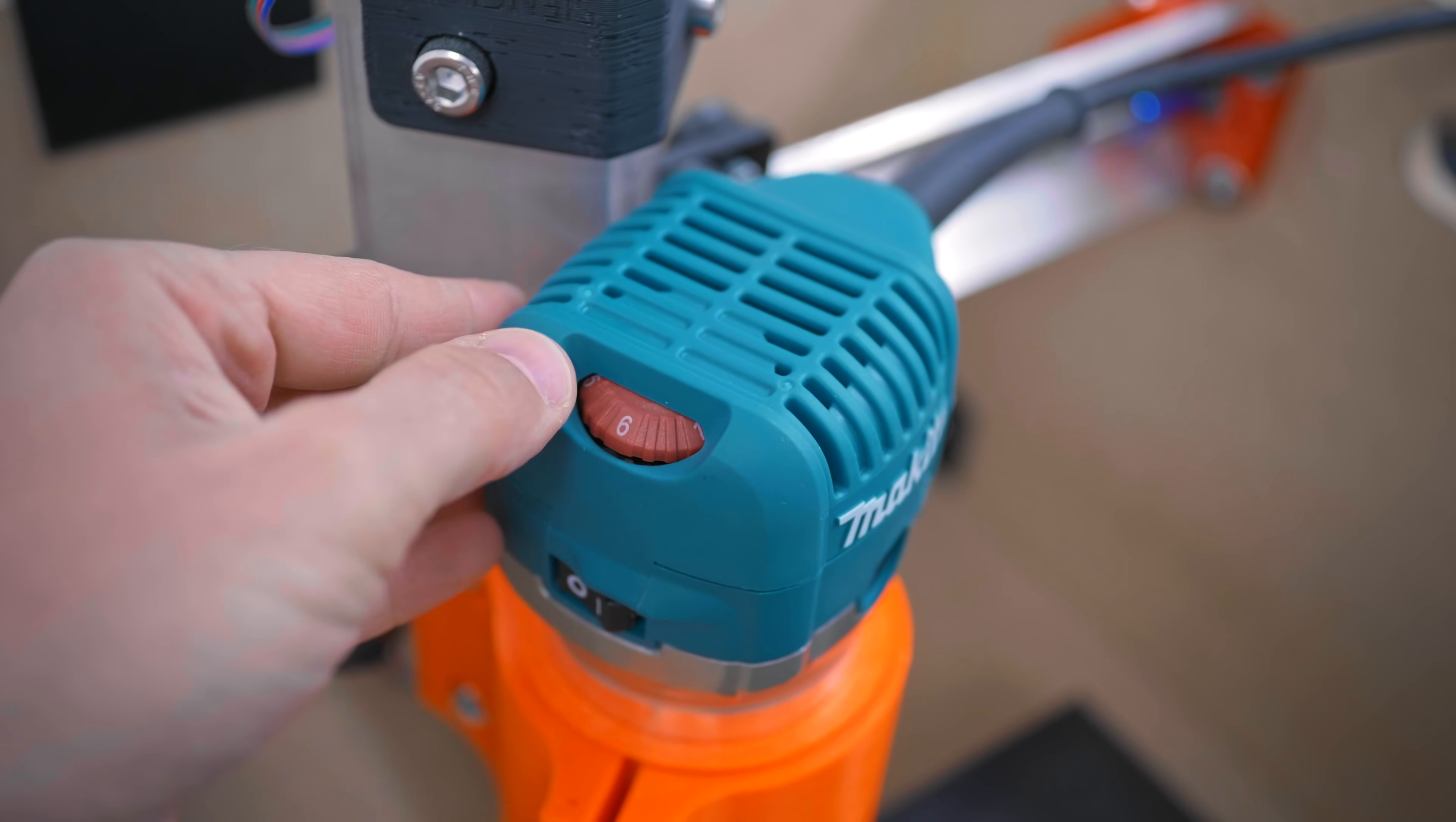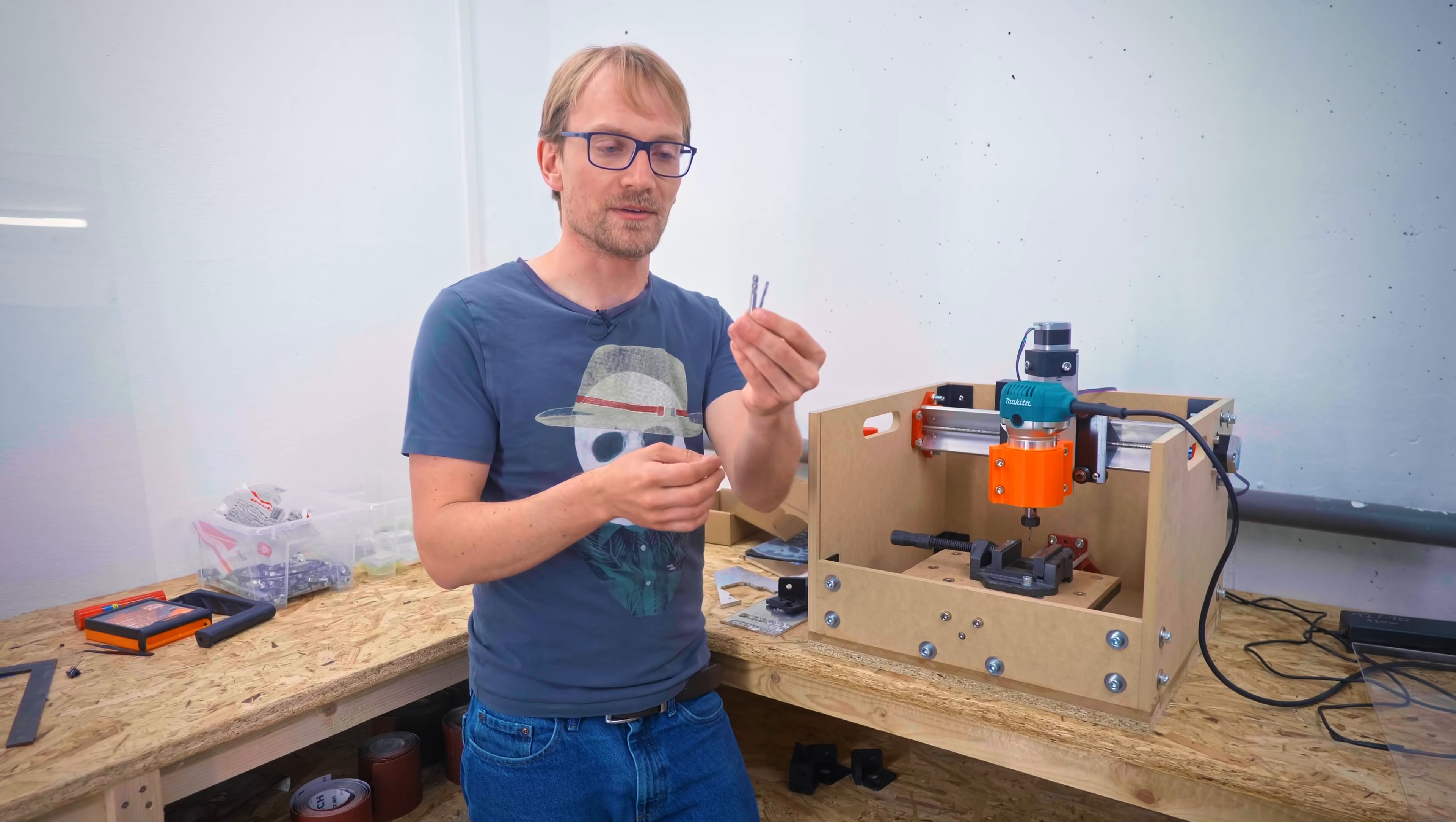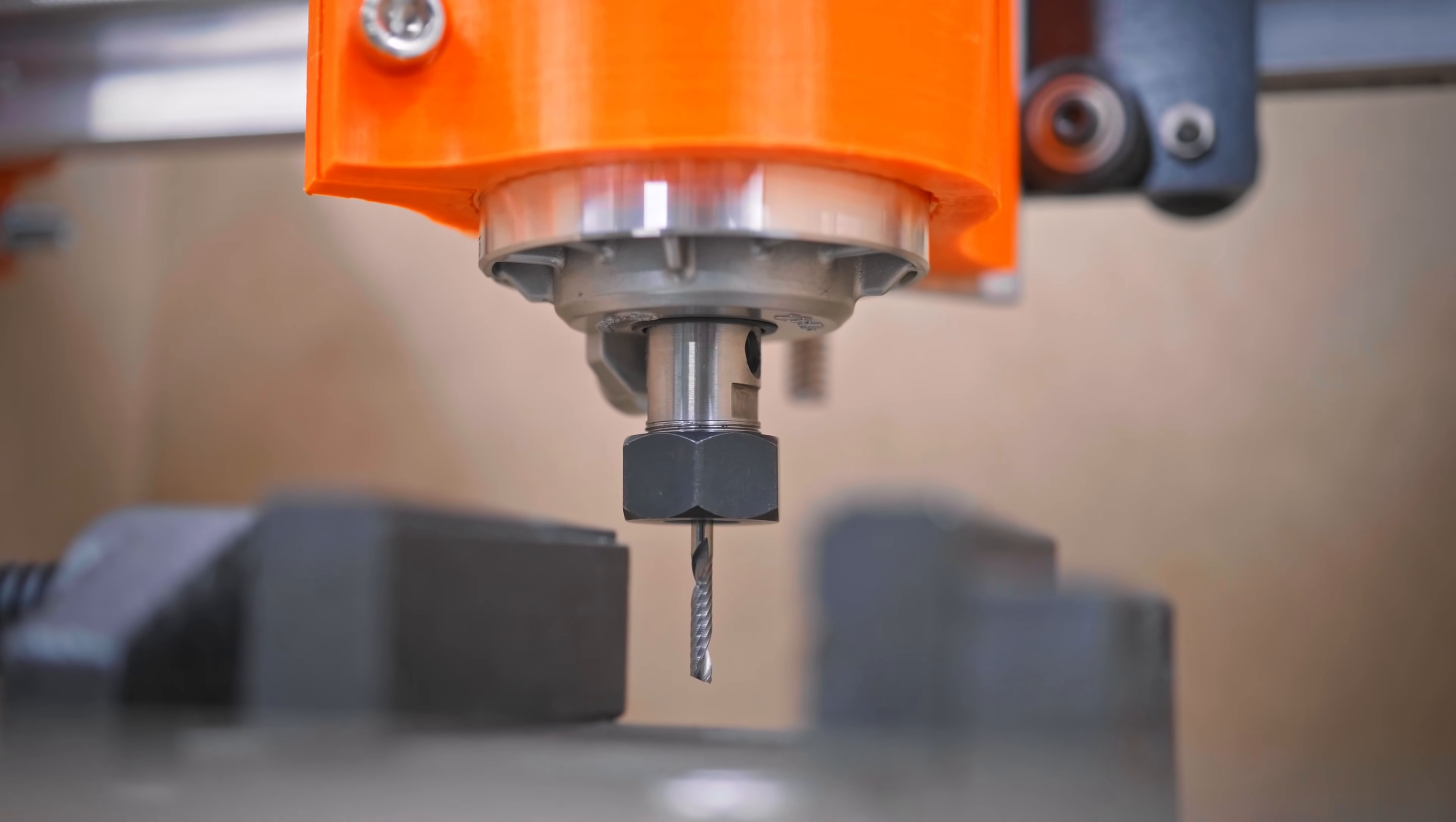But the downside is that the collet it comes with only clamps the largest 6mm end mills, not an eighth of an inch. I know I keep showing you these, but there you go, that's the size difference. You can buy a custom-made 8-inch collet for this router specifically, but after shipping and tax, that will cost me basically as much as the entire tool.